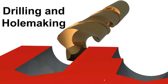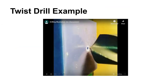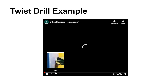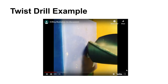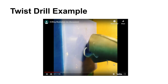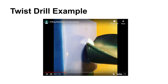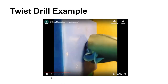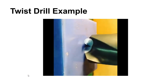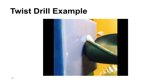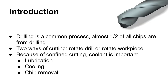We're going to have a look at drilling and hole making. Here's a clip of drilling action — this is a twist drill, and you can see it accumulating a spiral chip as it goes in. Drilling is a very common process; it's been said that almost half of the chips made in metalworking come from drilling.